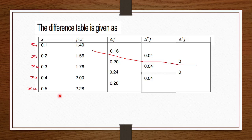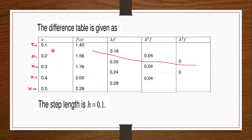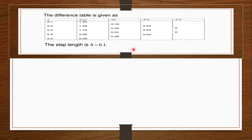In our next video we'll do the backward difference, where we take the back values. But for this one — forward difference — we take the values in front. We can deduce that our h value (step length) is 0.1, since the difference between the x values is 0.1. We have our Δf, Δ²f, and Δ³f values, so we can move to the formula and plug in the values to find our final approximations.